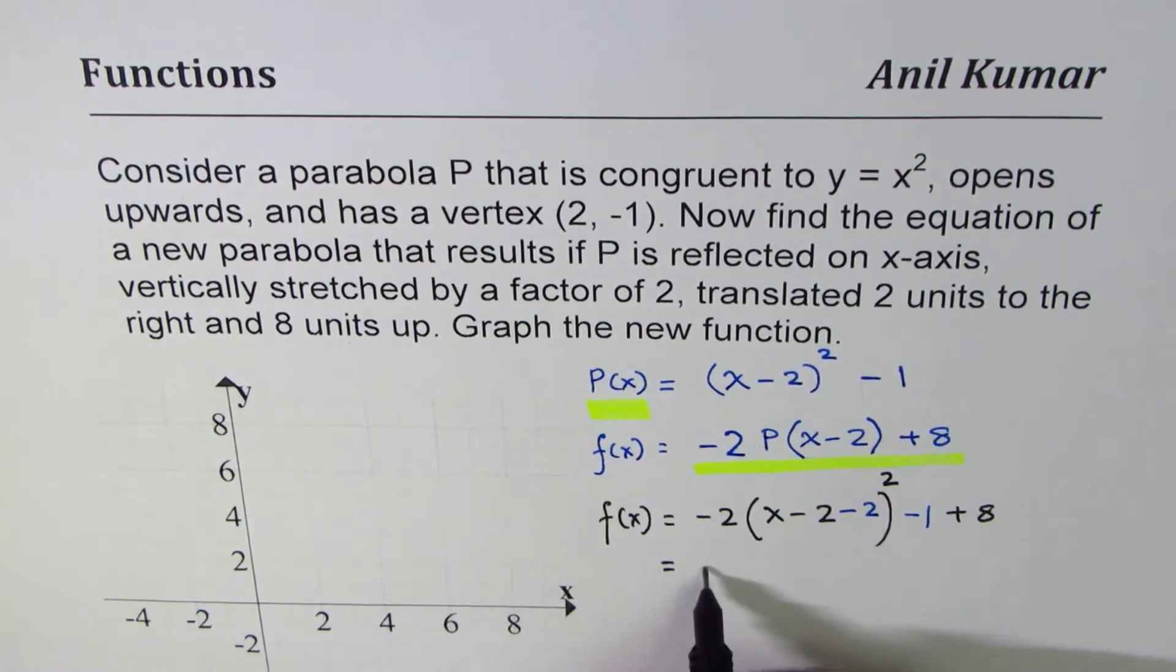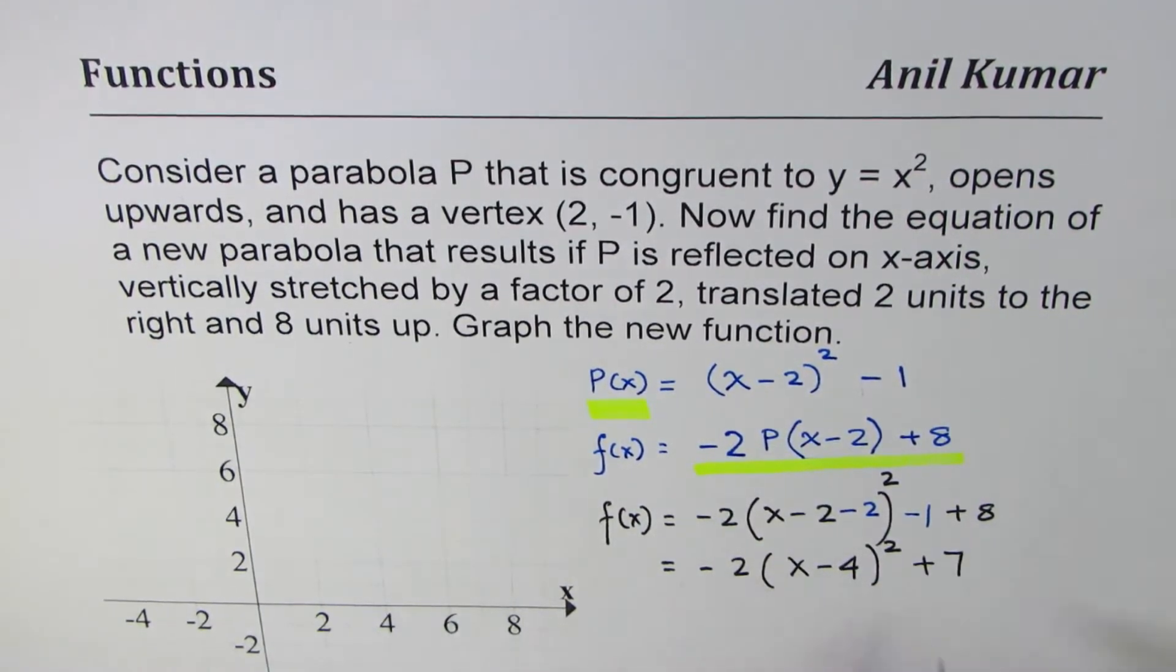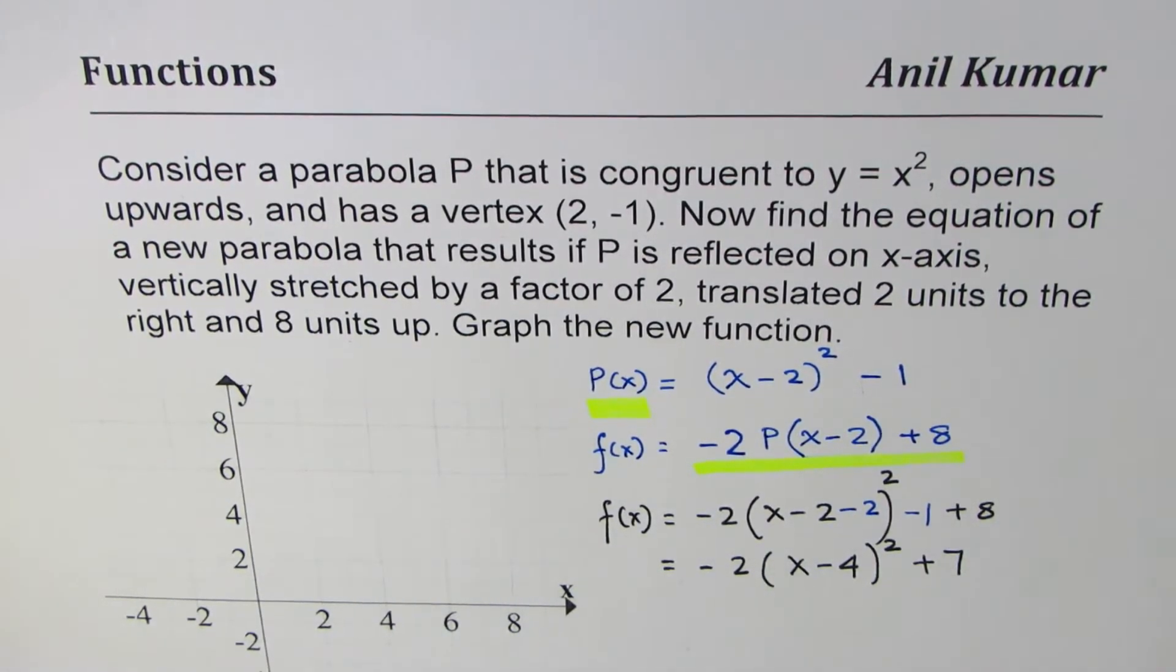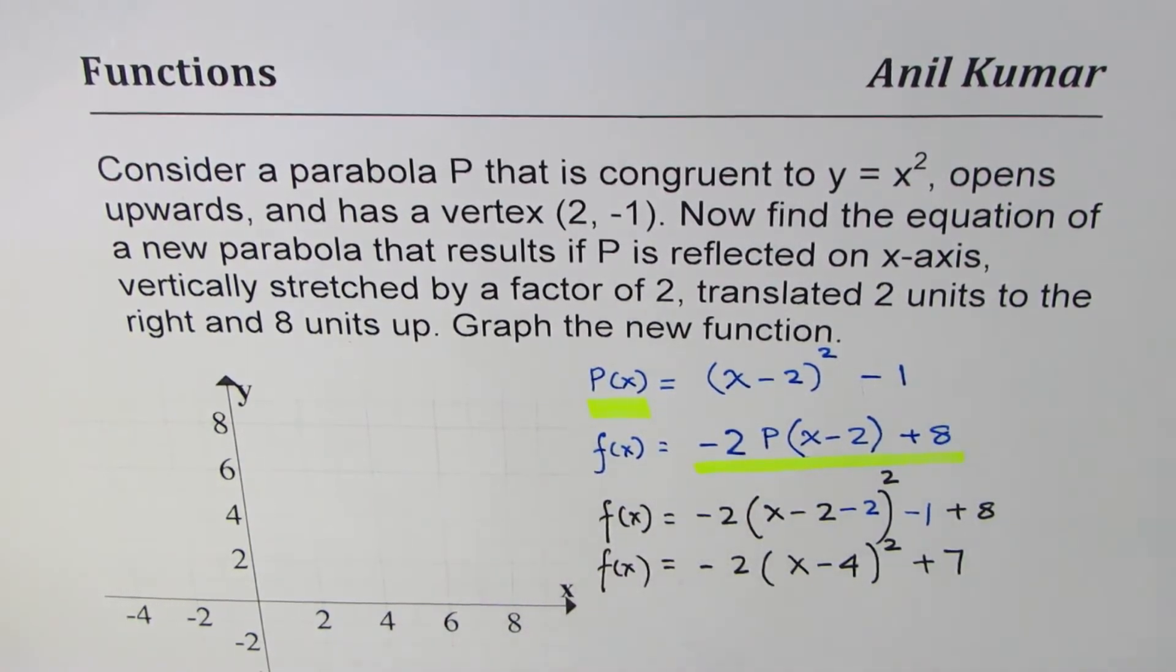So we had -1 here, we will add plus 8 to it. So what we get here is, I mean of course this is square, -2(x - 4)² and that becomes plus 7. So this becomes your transformed function. Now that is one way of doing it, so we get f(x) = -2(x - 4)² + 7.